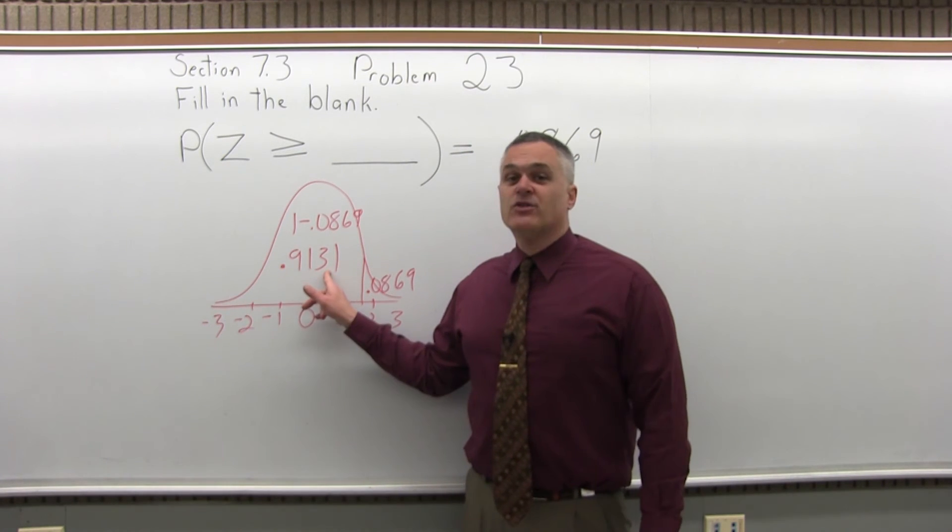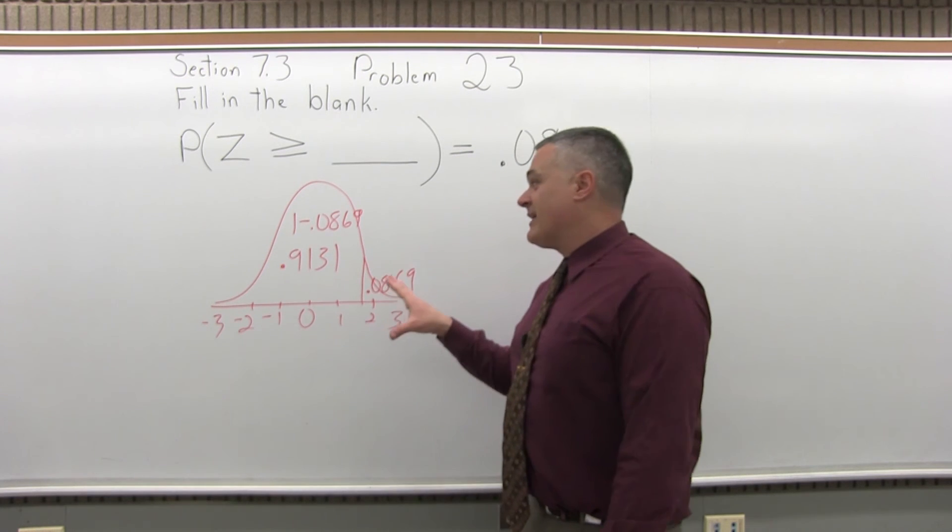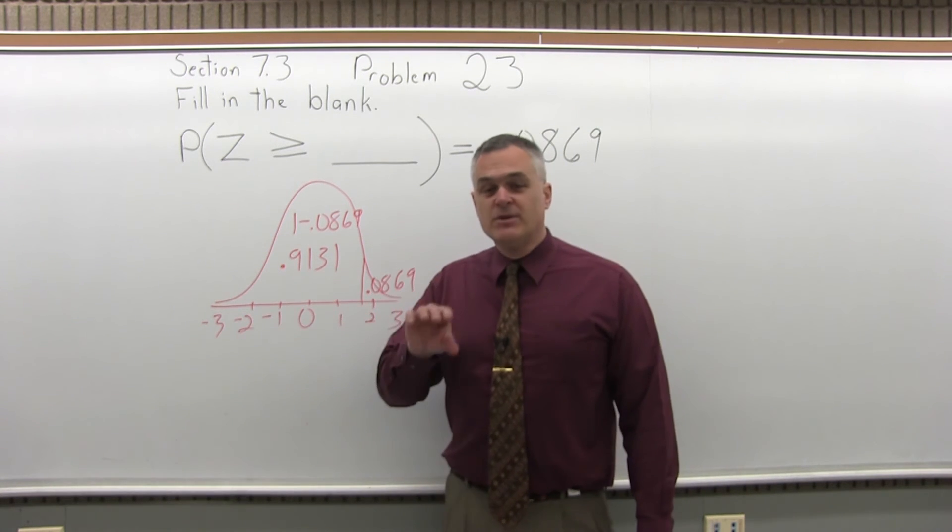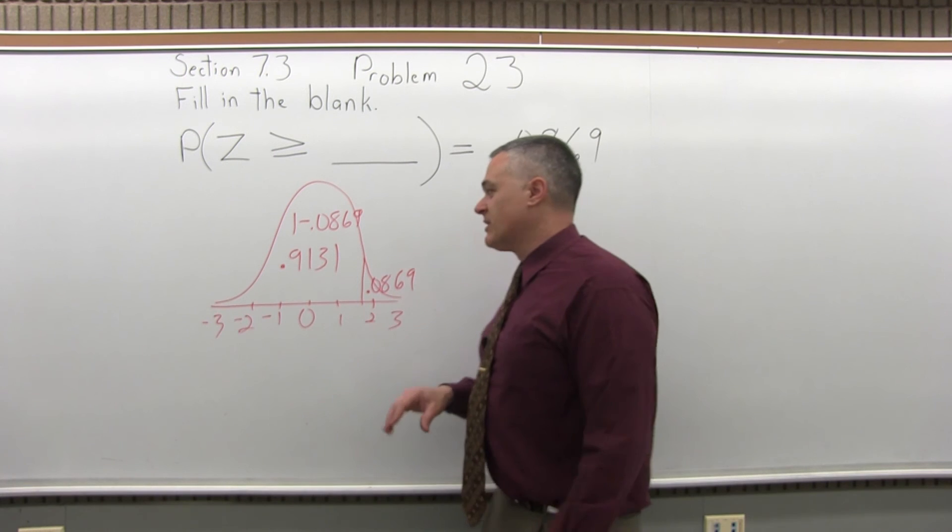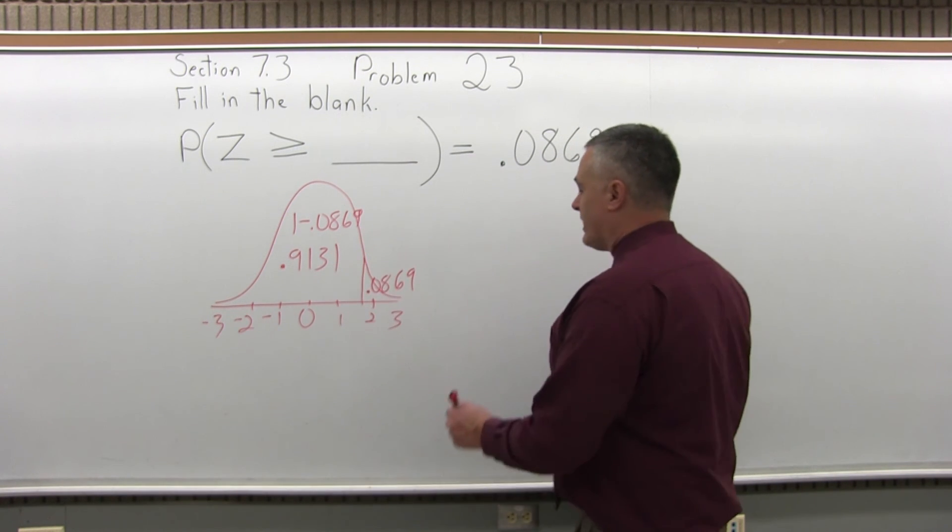So that's the value from the chart. You want to look through the center part of the chart and find that .9131. The numbers go in order, they get progressively bigger. So wherever you start, keep following until you get to the .9131 and it'll be in there.